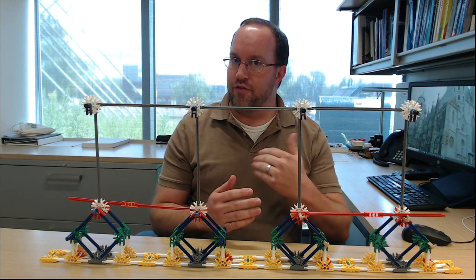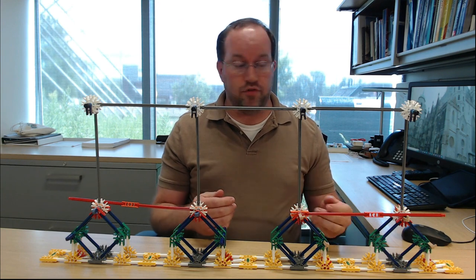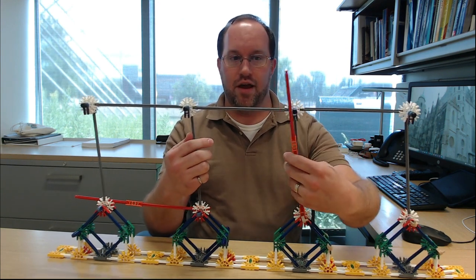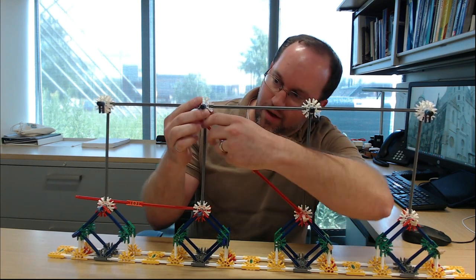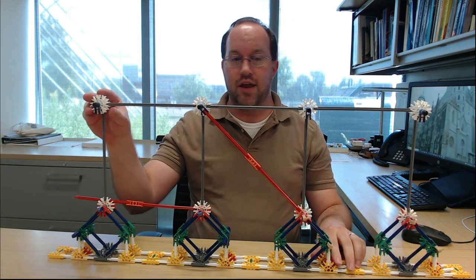Well I'll introduce a lateral load resisting system and the first one we'll talk about is the braced frame. So to create a braced frame we're going to create some diagonal bracing. I'll take this first brace right here and connect it right up front and you'll notice that once I've connected a single brace to the structure it is now stable.